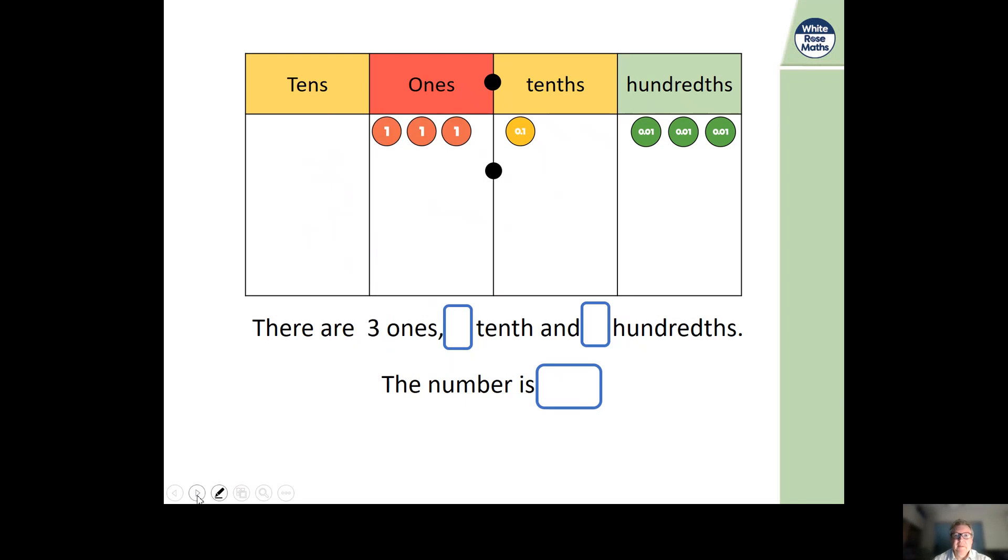How do we get this one? Three. How many tenths? One. How many hundredths? Three. So the number is three point one three: three ones, one tenth, three hundredths.